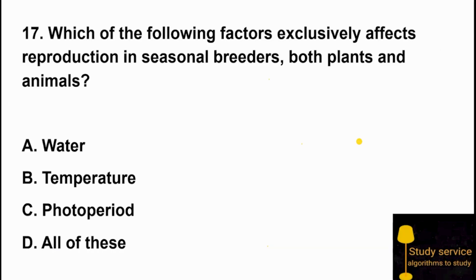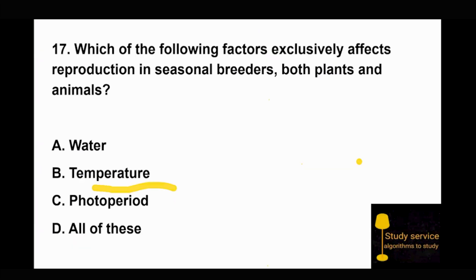Question 17: Which of the following factors exclusively affects reproduction in seasonal breeders, both plants and animals? Option A: water. Option B: temperature. Option C: photoperiodism. Option D: all of these. Option C, photoperiodism, is the factor that exclusively affects reproduction in seasonal breeders.